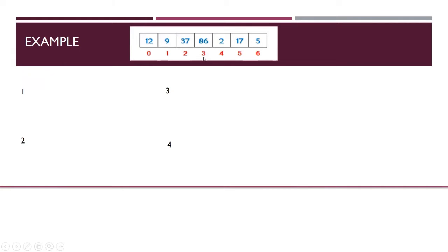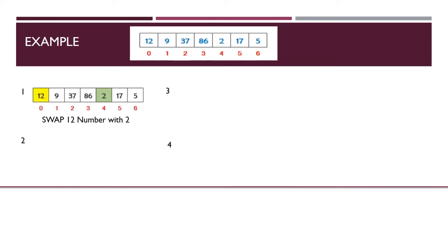Let us start. First, find the smallest number stored in the array between index 0 and 6. The smallest number is 2. Check if the number at index 0 is greater than the smallest number. If so, then swap the numbers.